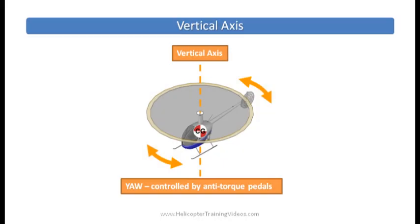The first axis we're going to look at is called the vertical axis. Like all axes of rotation, it runs through the center of gravity of the aircraft. In this case, the vertical axis runs, as it implies, vertically, straight up and down through the center of gravity. On this axis, we yaw the helicopter left and right by using the anti-torque pedals.